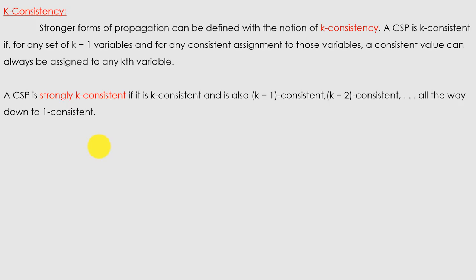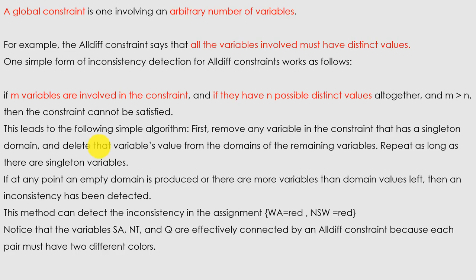To summarize: we covered inference in CSP — constraint propagation, node consistency, arc consistency, path consistency, k-consistency, and global constraints — all illustrated with the map coloring problem. If you have any doubts or questions, you can put them in the comments. Thank you.